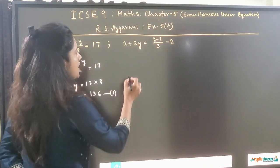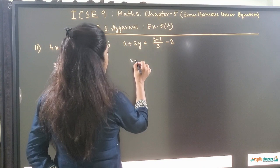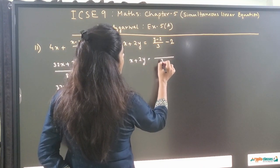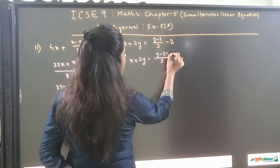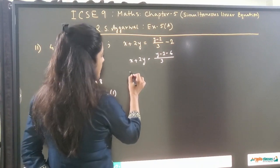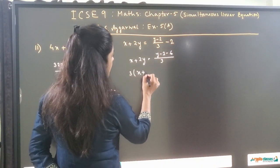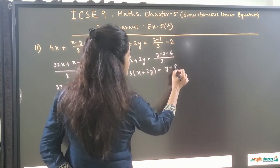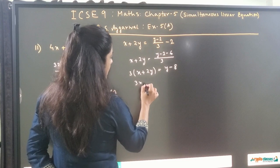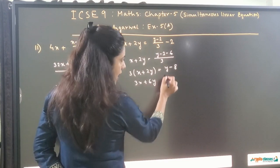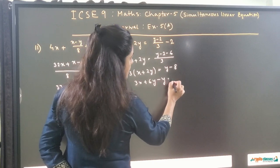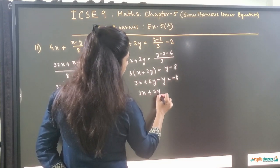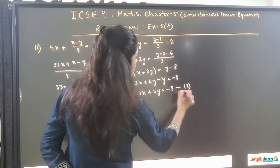Similarly, processing the second equation: x plus 2y equals (y minus 2) by 3 minus 2. Taking LCM 3, and bringing 3 to this side: 3(x plus 2y) equals y minus 8. So this gives 3x plus 6y, and bringing y to this side gives 3x plus 5y is equal to minus 8. This is equation 2.